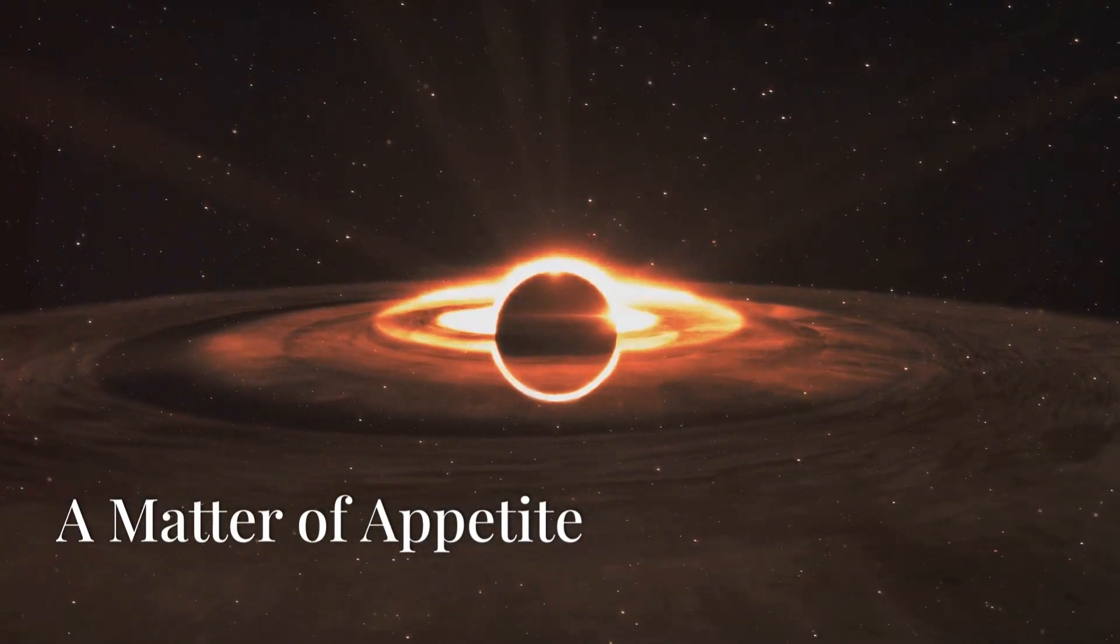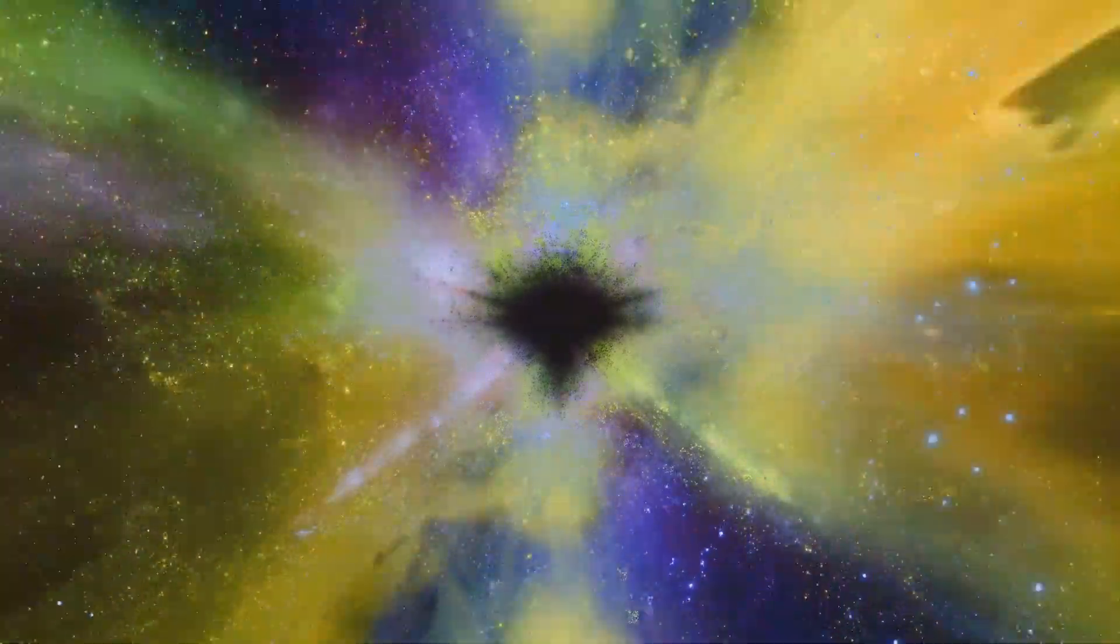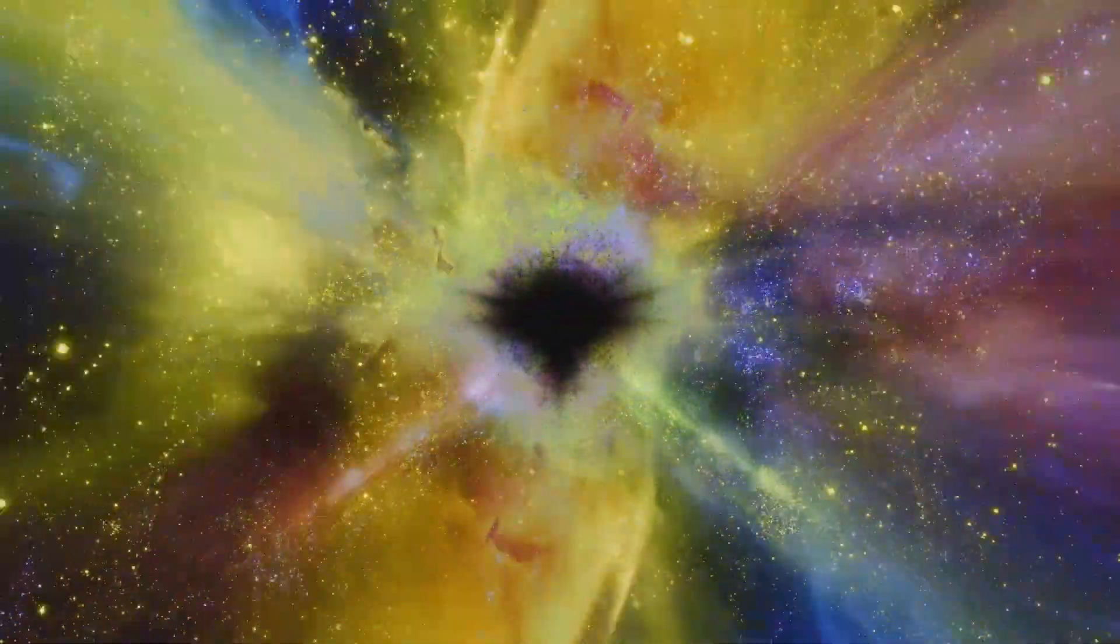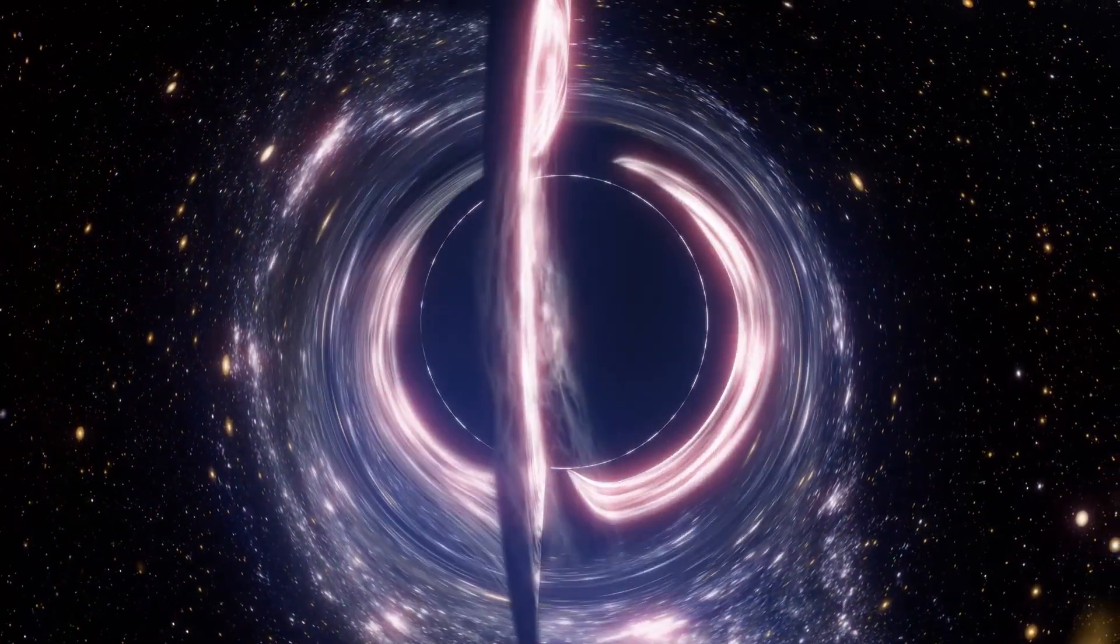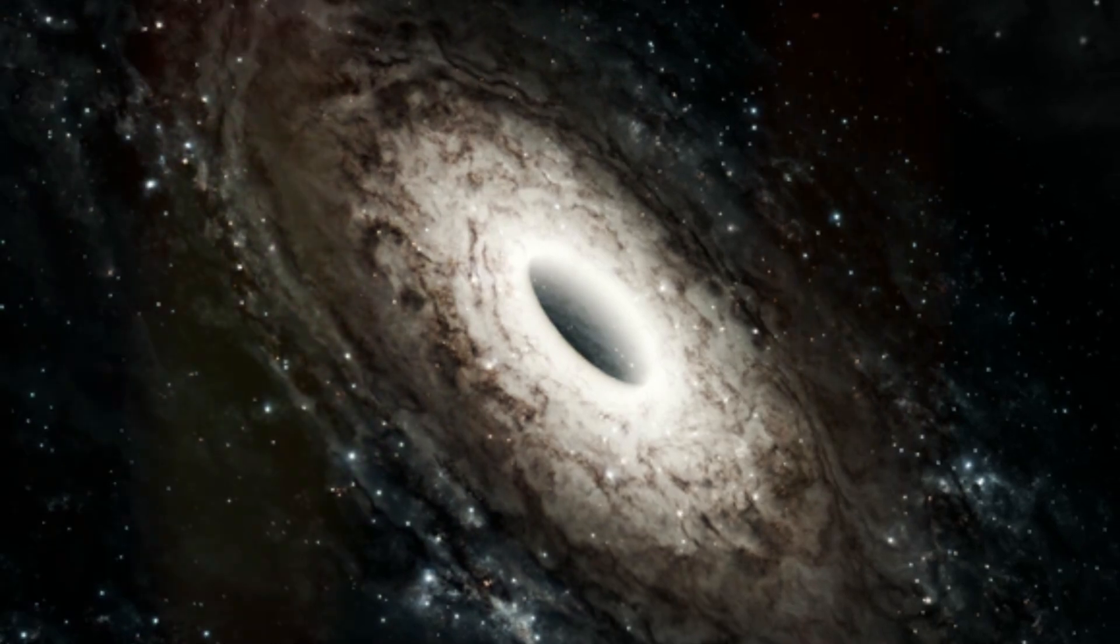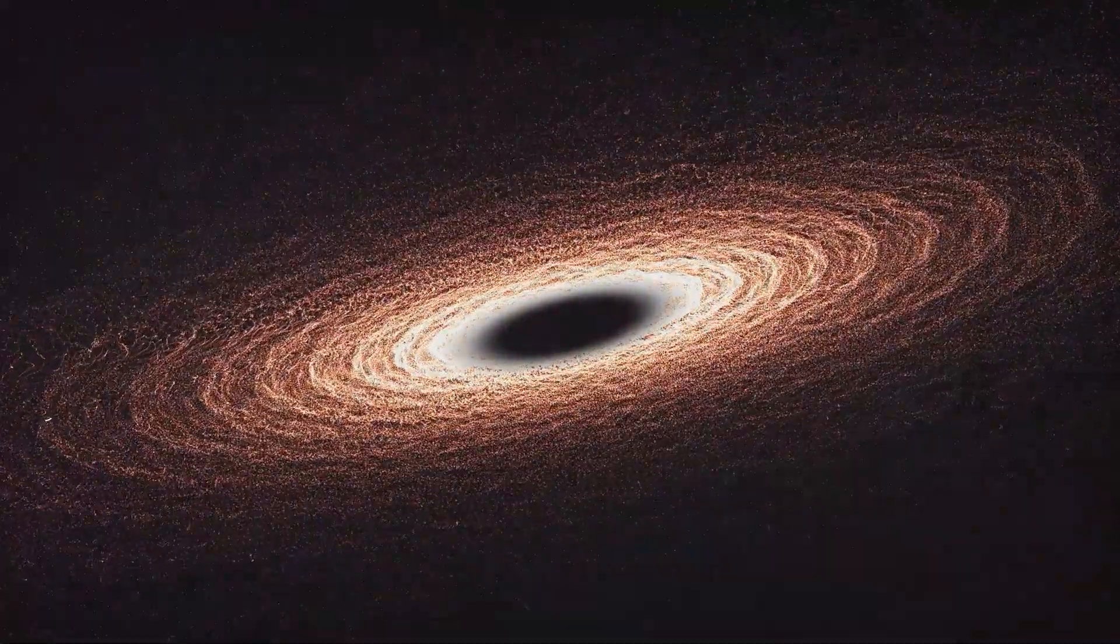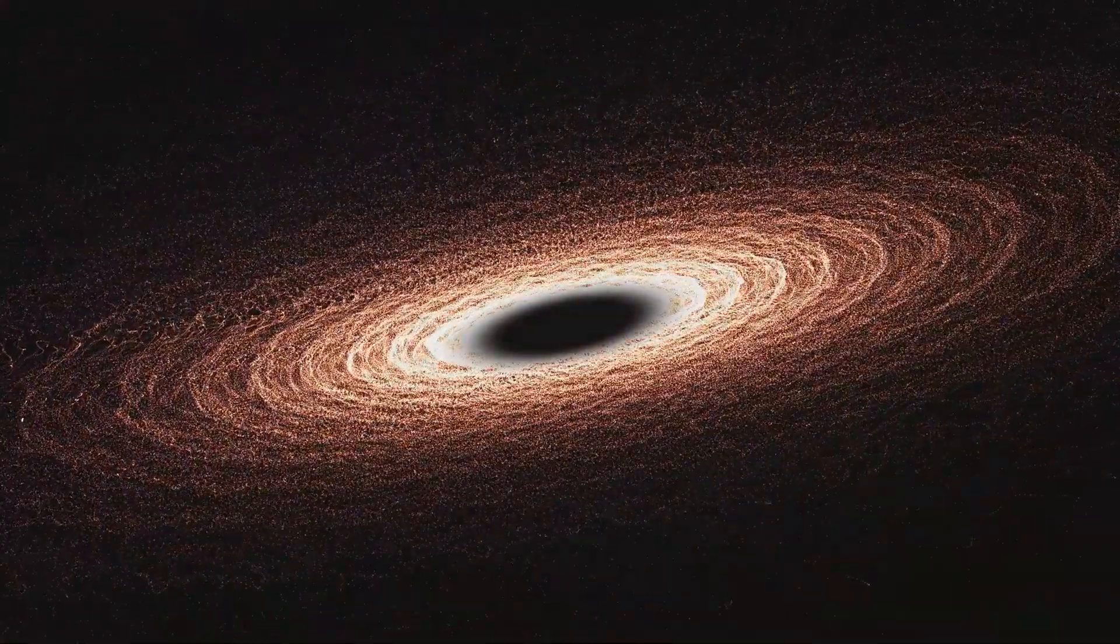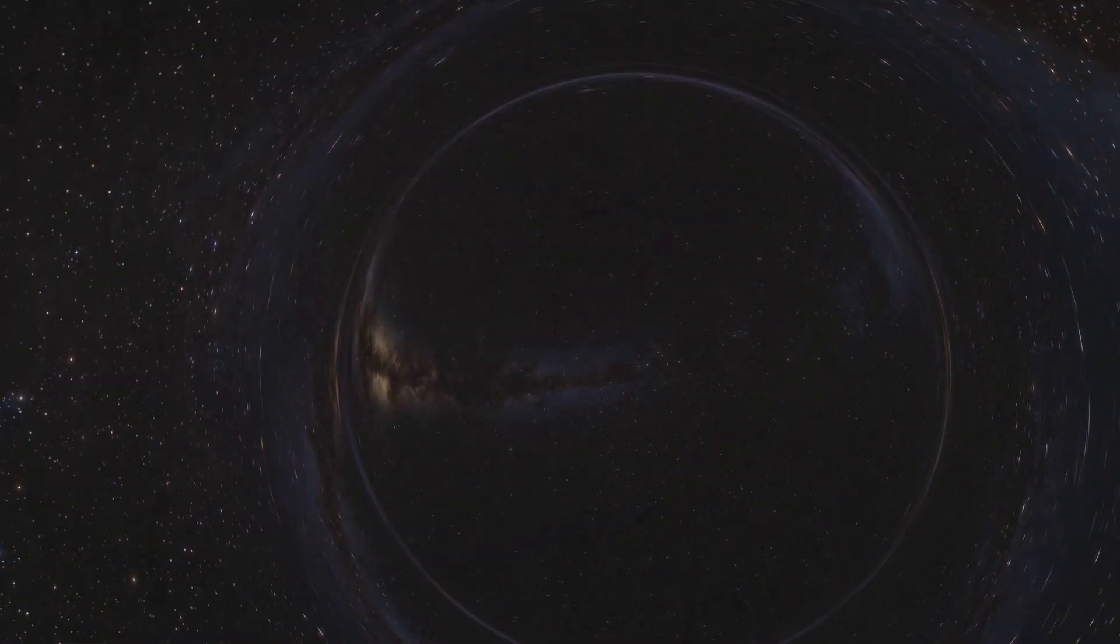While Porphyrian may not be the biggest black hole, its appetite is remarkable. Porphyrian's accretion disk is particularly bright and active, suggesting it's in a period of intense feeding. Compared to other black holes, Porphyrian's feeding frenzy is quite remarkable. Some black holes are relatively quiet eaters, slowly sipping on the surrounding gas and dust. Others, like Porphyrian, are voracious consumers, gobbling up material at a prodigious rate. This insatiable hunger has important implications for the evolution of Porphyrian and its surroundings.